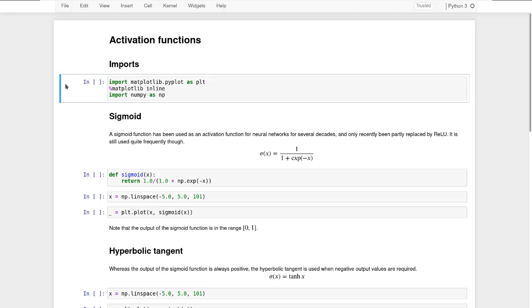Let's look at some common activation functions. So first, we import matplotlib. As usual, we activate it for displaying plots in line, and we also require NumPy.